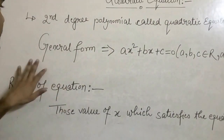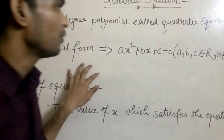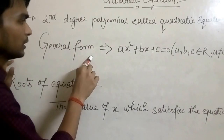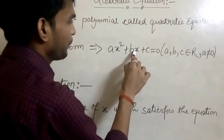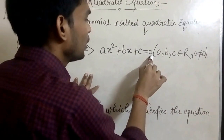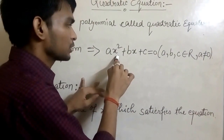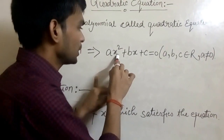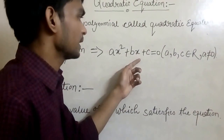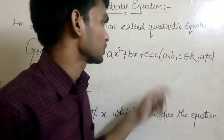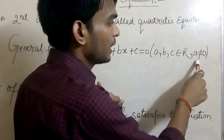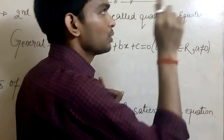This is the general form of the quadratic equation: ax² + bx + c = 0, where a is the coefficient of x², b is the coefficient of x, and c is the constant in this equation. And a, b, c belong to real numbers with a not equal to 0.